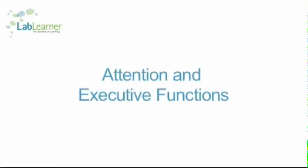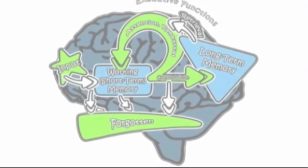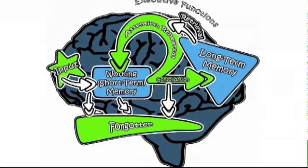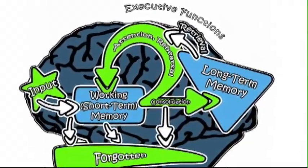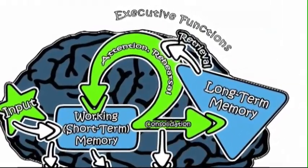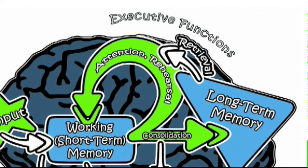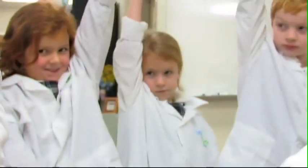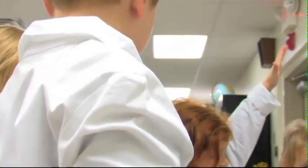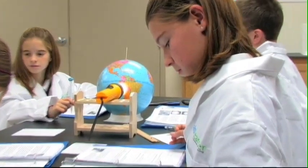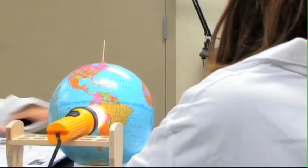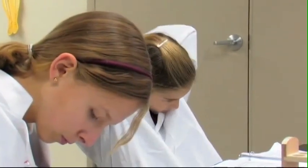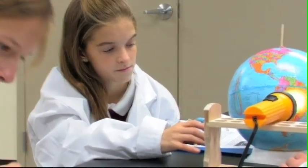As suggested in the information processing model, attention and executive functions play various and controlling roles in the overall process. Executive functions essentially oversee the handling of new information — they orchestrate the retrieval of relevant pre-existing information from long-term memory, guiding rehearsal while helping direct attention. When a student decides that a new piece of information is similar to something they've seen before, that's an example of using their executive functions. When a student is reading and realizes they didn't understand a concept and decides to reread the paragraph, they use executive functions both to check their understanding and to formulate a plan for improving it.